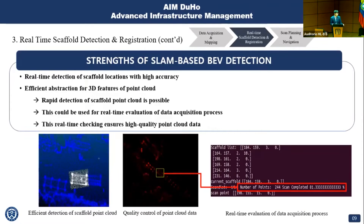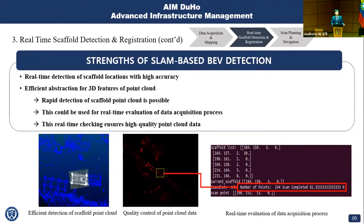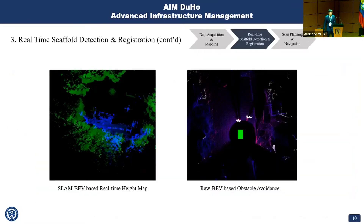The real strength of this method is rapid detection of scaffold point clouds. We can simply extract the point clouds inside the bounding box to detect scaffolds. This can be used for real-time evaluation of the data acquisition process, as shown in the figure. Besides detection, I also used SLAM-based bird-eye view for a real-time height map, and raw point cloud-based bird-eye view for easy obstacle avoidance, which is the classical use of bird-eye view.